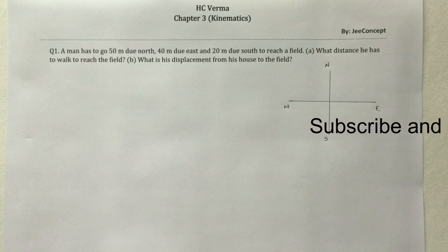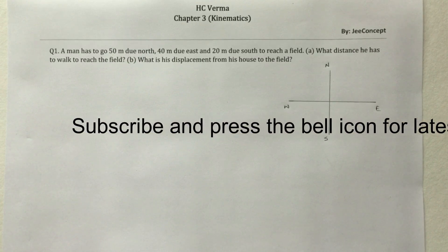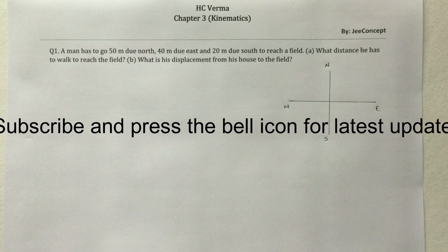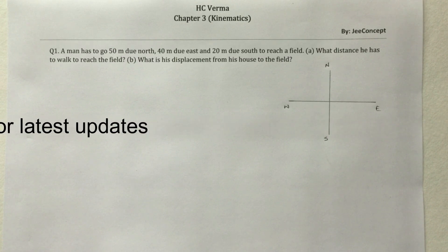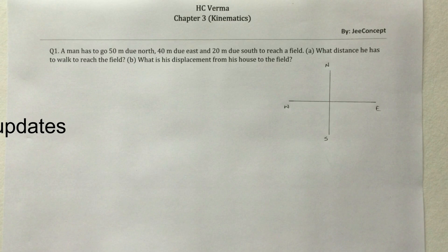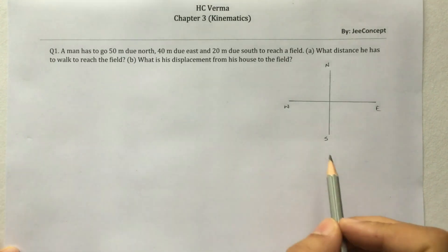Hello friends, this is the solution video for question number one, chapter 3, S.C. Verma. The problem statement says a man has to go 50 meters due north, 40 meters due east, and 20 meters due south to reach a field. We have to find: (A) what distance he has to walk to reach the field, and (B) what is his displacement from his house to the field.